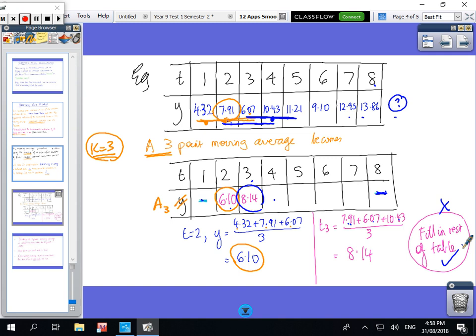We've got some more numbers to put in. 8.14, you should have got 9.24 as the next number, 10.24, 11.09, and the last number should have been 11.97.